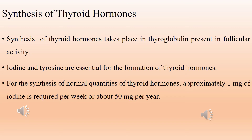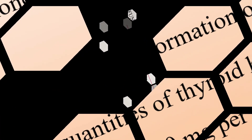Synthesis of thyroid hormones takes place in thyroglobulin present in the follicular cavity. Iodine and tyrosine are essential for the formation of thyroid hormones. Iodine is consumed through diet; it is converted to iodide and absorbed from the gastrointestinal tract. For the synthesis of normal quantities of thyroid hormones, approximately 1 mg of iodine is required per week or about 50 mg per year. To prevent iodine deficiency, common table salt is iodized with 1 part of sodium iodide to every 100,000 parts of sodium chloride.